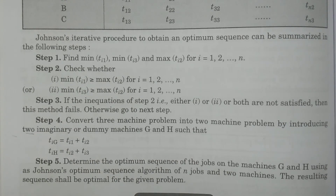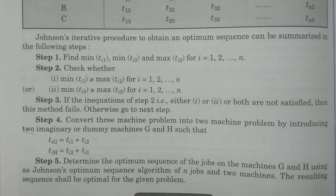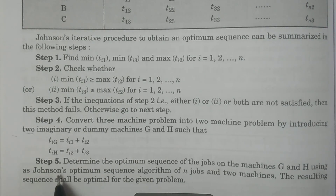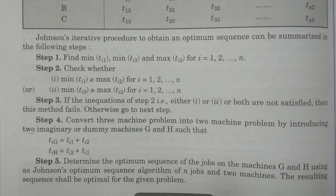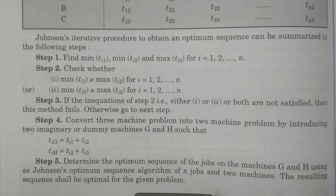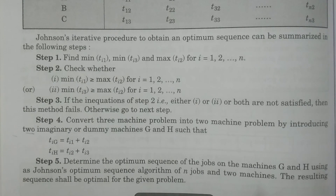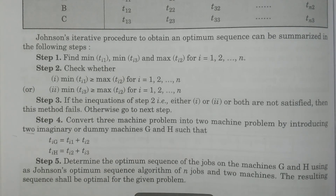Now the problem is converted from a three-machine problem to a two-machine problem. In step five, determine the optimum sequence of jobs on machines G and H by applying Johnson's algorithm for n jobs and two machines, which we have already learned. We apply that procedure to obtain the optimum sequence of jobs on the two dummy machines G and H.